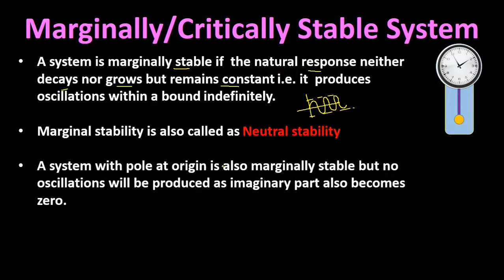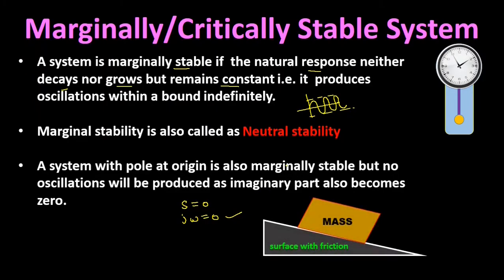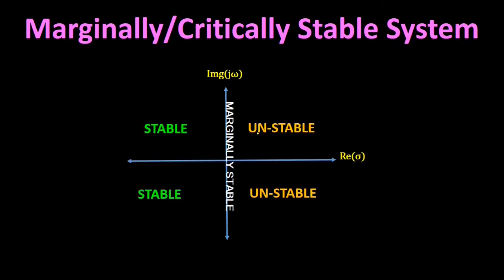A system with a pole at origin also comes under marginally stable systems. In such a system there will be no oscillations produced at the output, because when a pole is at origin, s equals zero, meaning j·omega equals zero — the imaginary part also becomes zero. Therefore no oscillations are produced when a single pole exists at origin. An example of such a system is a mass on a surface with friction.